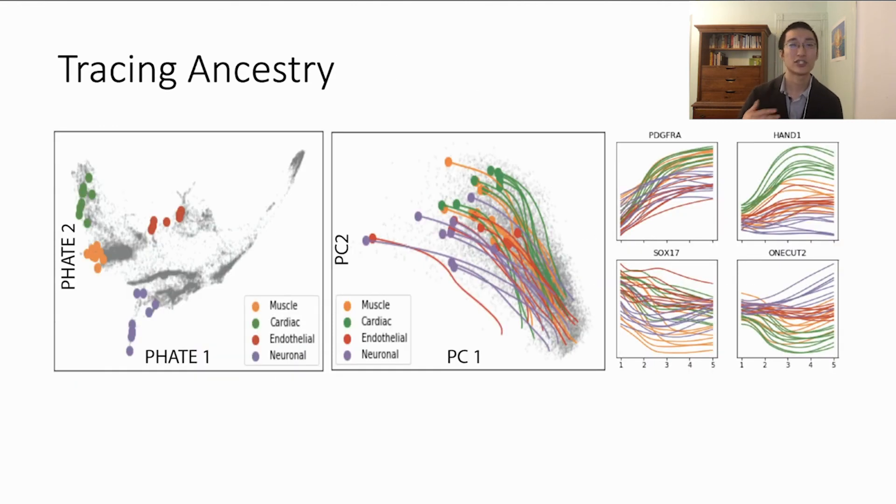So once we have a TrajectoryNet model, we can trace back the ancestry of easily identified and well-differentiated cells to find early markers of their divergence. This is important for understanding gene regulation and can potentially discover novel markers of development or disease.